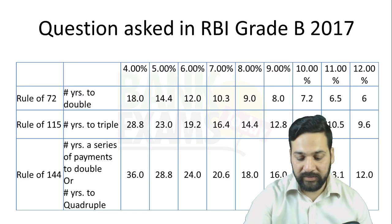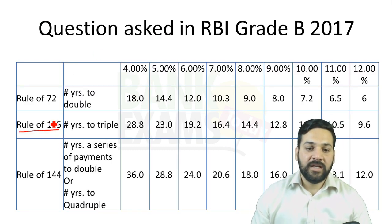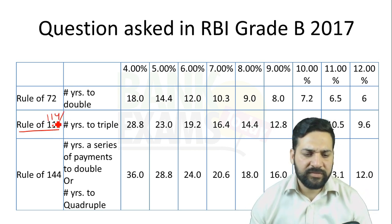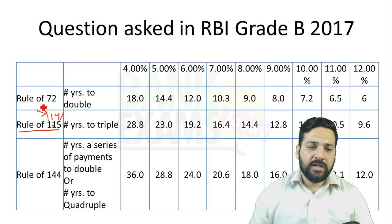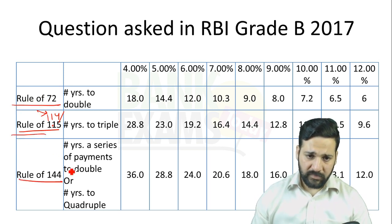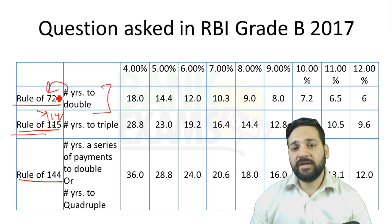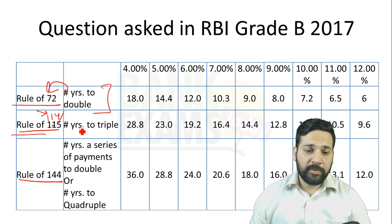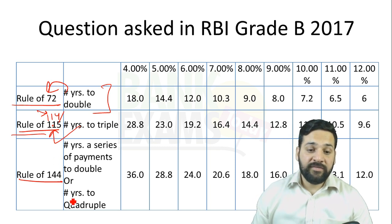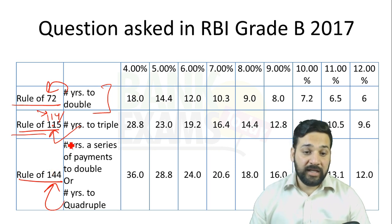To solve these questions, we use different rules. Some people use 115 and some use 114; I personally use 114. So: if the money is doubled, use the Rule of 72. If the money is tripled, use the Rule of 114. If the money is quadrupled, use the Rule of 144.